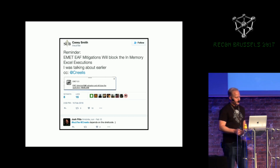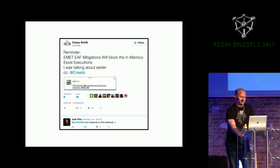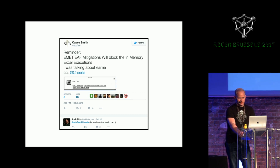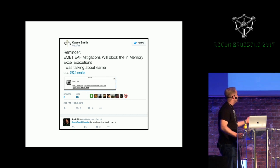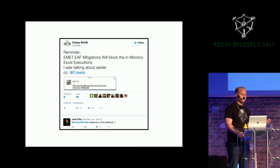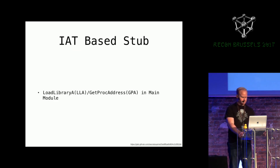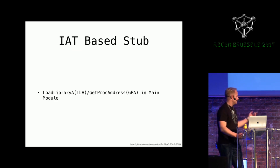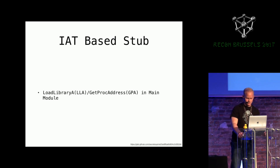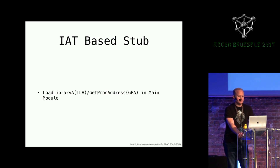I was looking at Twitter and Casey Smith — who executes code in places you're not expecting it, like signed binaries such as MSBuild, bypassing whitelisting solutions — was talking about EAF mitigations getting flagged in Excel. I knew exactly what his problem was, so I sent him my import address table stub and we started to collaborate. He went crazy with it — he was using it everywhere.